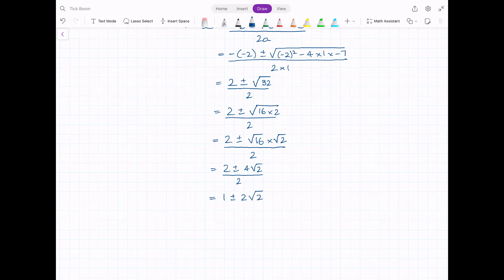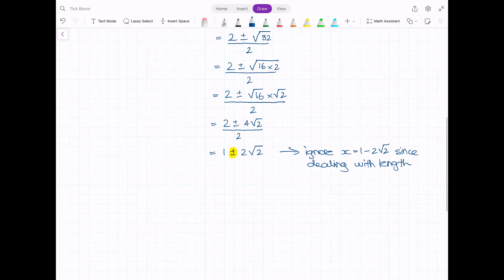Given we are dealing with length, whilst we do at first glance have two solutions here, really we only want to take the positive solution because we're dealing with positive length. So 1 minus 2√2 would be negative, so we're going to ignore x = 1 - 2√2 since we're dealing with length. Therefore x = 1 + 2√2.